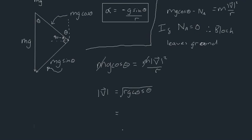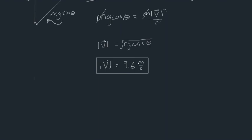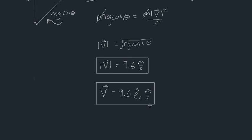Substituting values — r = 10, θ = 20°, g = 9.81 — gives v = √(10 × 9.81 × cos20°) = 9.6 meters per second. So the minimum velocity to leave the ground is 9.6 m/s, tangential to the path — written as 9.6·eₜ m/s. In the next video I'll cover a slightly more challenging problem which might involve a change in radius.